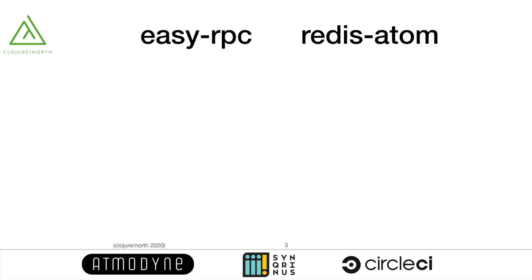So I wrote two little toy projects that aim to abstract some of that glue code required to create microservices quickly. The first one is EasyRPC. It aims to provide an easy way to break your libraries into microservices. When you write your library, it's very easy to call any library function when it's on the same machine — you just require a library and call a function. So what EasyRPC aims to do is to make it almost as easy to call your function on a remote service.